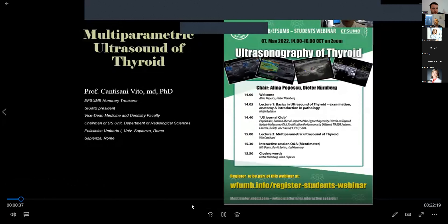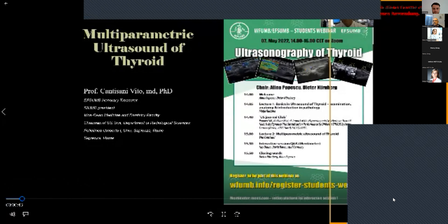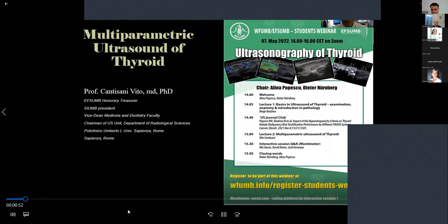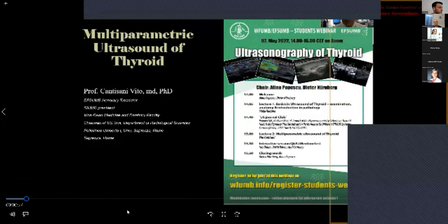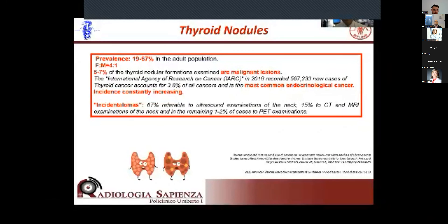The second lecture is now beginning. Speaker Vito Cantisani introduces himself as organizing his last congress as president of the Italian Ultrasound Society in Matera, southern Italy. He acknowledges that Maya provided comprehensive basics on thyroid ultrasound. He begins with epidemiology of thyroid nodules: prevalence ranging between 19 and 67 percent, mostly affecting female patients, with only five to seven percent being malignant — yet this is the most common endocrinological cancer.